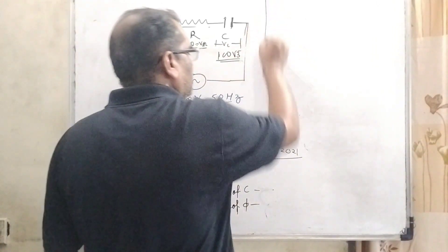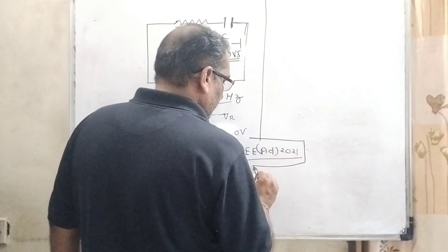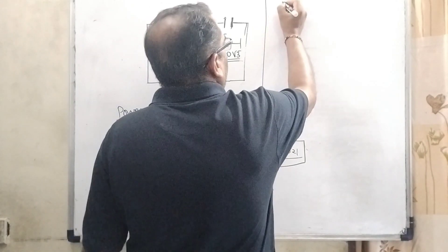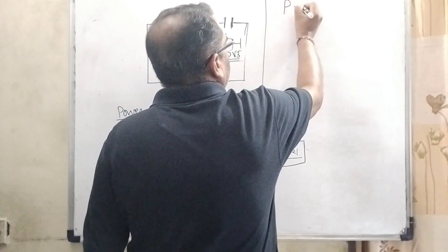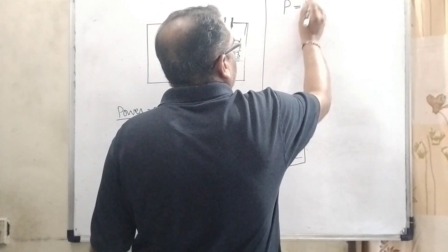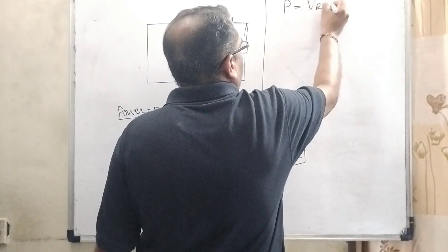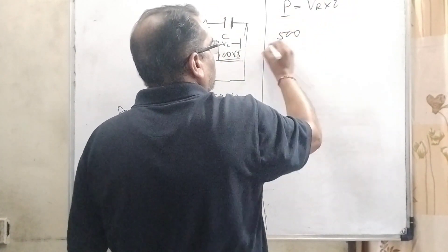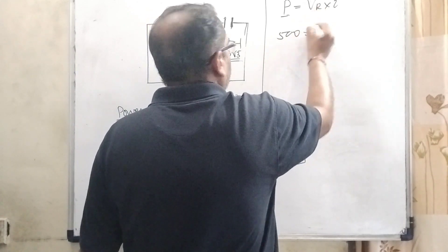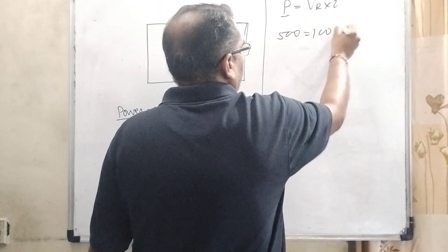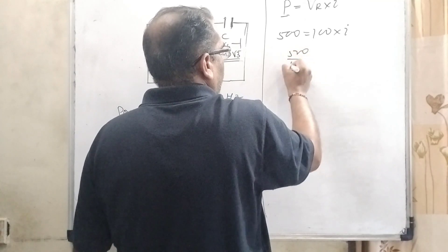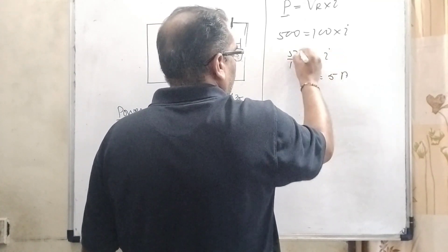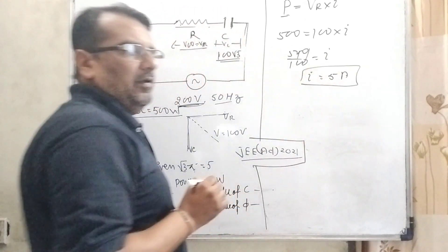Now before finding the value of capacitance, let us first find the current. As we know that power equals V_R times I. Power is given as 500 watt and V_R is 100 volt, so 500 divided by 100 equals I. Therefore I equals 5 ampere.